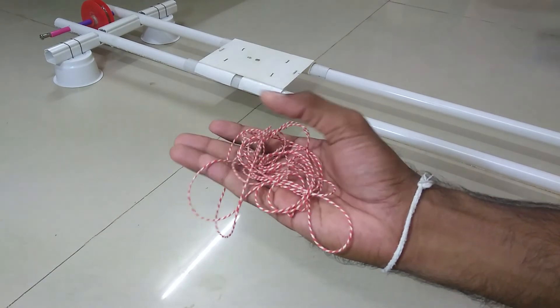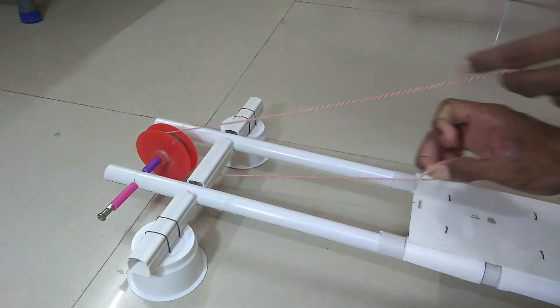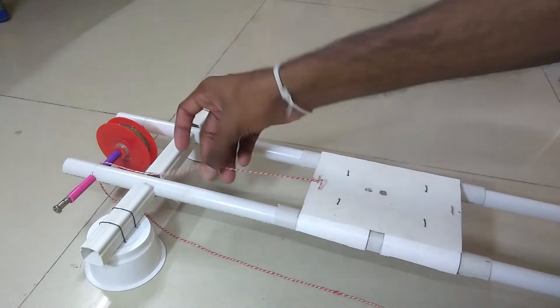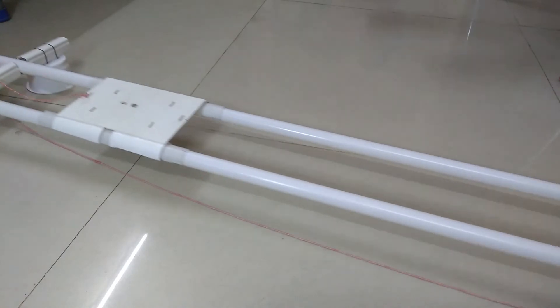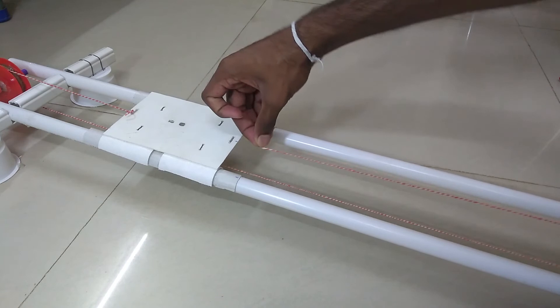Now take the thread and tie one end to the slider. Keep the thread through pulleys and tie it to the slider again.